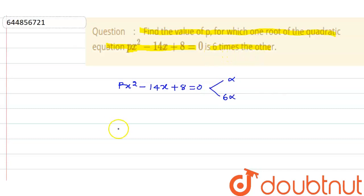If I apply the sum of the roots formula, this is 7 alpha equals minus b by a, that means 14 by p. And if I apply product of roots, this will be 6 alpha square equals c by a, that is 8 upon p.